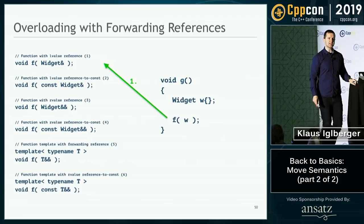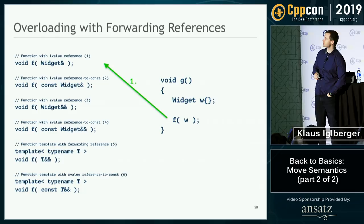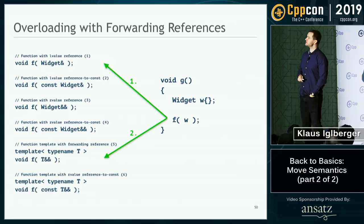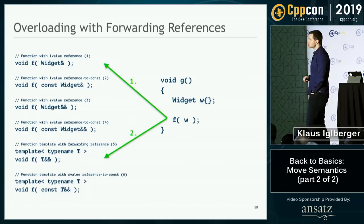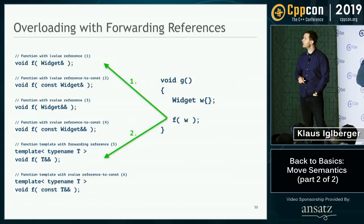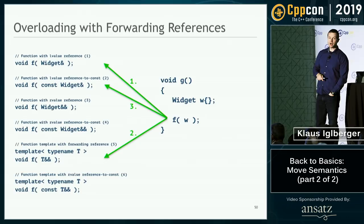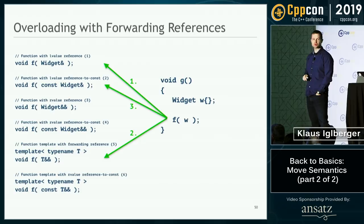The answer is function 1. Function 5 is also instantiated and produces the same signature as function 1 — f(widget&). When a template instantiation matches a non-template function exactly, the non-template is preferred, so function 1 wins. Without function 1, function 5 would be the best match. And the third-best choice is function 2 — an l-value can bind to l-value reference-to-const. Functions 3, 4, and 6 are not options: l-values do not bind to r-value references.